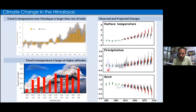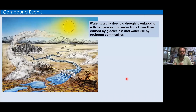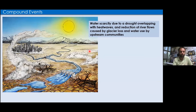Looking at projections, the first part of the figure shows the observed time series and the rest shows projections. There is an increase in rainfall projected to continue increasing, while snow accumulation is decreasing and projected to decrease further. This will affect not only the Himalayan region but also downstream areas. In IPCC terminology, these are called 'compound events.' When we have drought or monsoon deficit downstream, water scarcity and reduced river flows due to glacier loss can affect the entire Indian region.